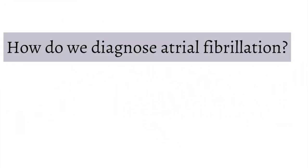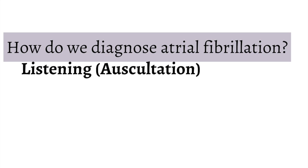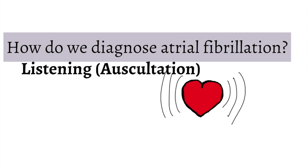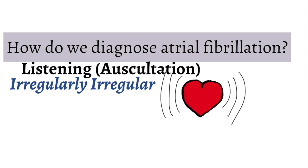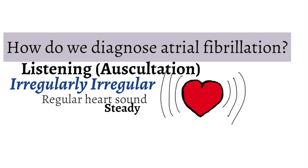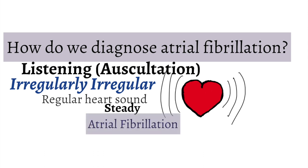Understanding how to recognize and diagnose atrial fibrillation is key in preventing its complications. The easiest way to diagnose AFib is simply by listening. During a physical examination, atrial fibrillation is characterized by an irregular heartbeat — the time between beats does not stay constant, so it sounds irregular. The pattern of a regular heartbeat is illustrated here. You can hear how AFib has an irregularly irregular pattern. When suspecting AFib, I also palpate the radial pulse, which will be irregular as well, helping to confirm the diagnosis.